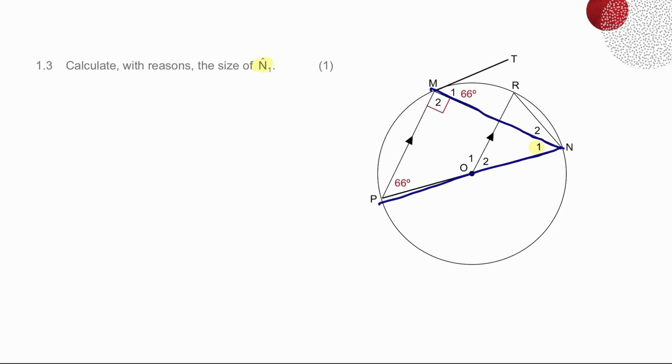but I can also see that if I just draw in that line, I have a triangle in which I've already processed that angle M2 is 90, and that angle P is 66. So to find angle N1, I simply have to find the third angle in the triangle.